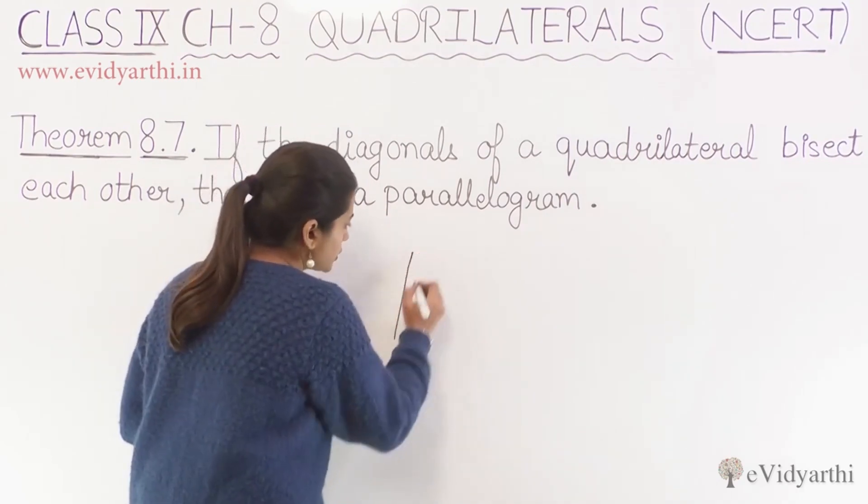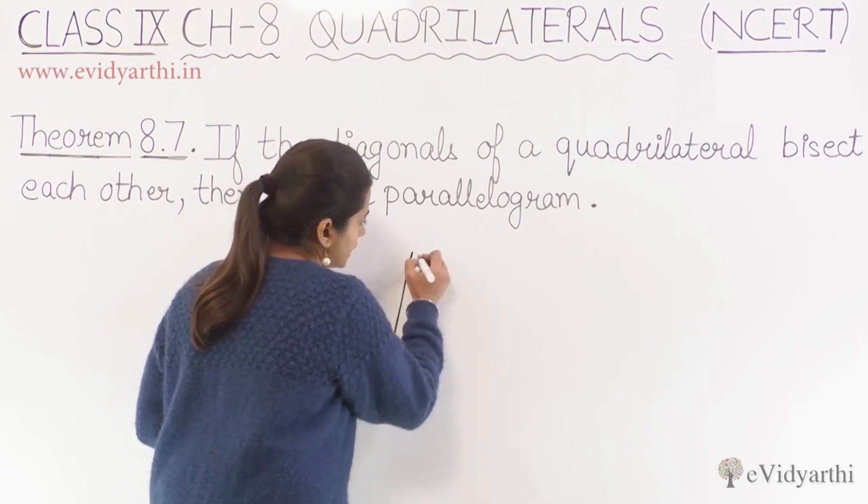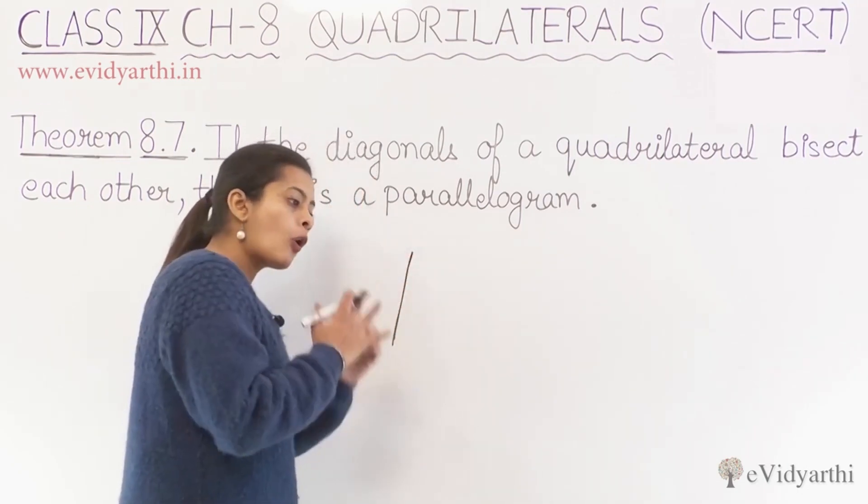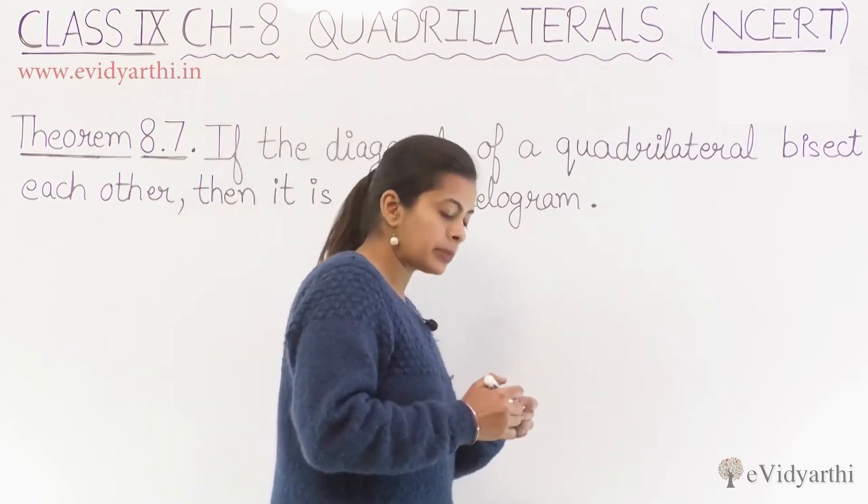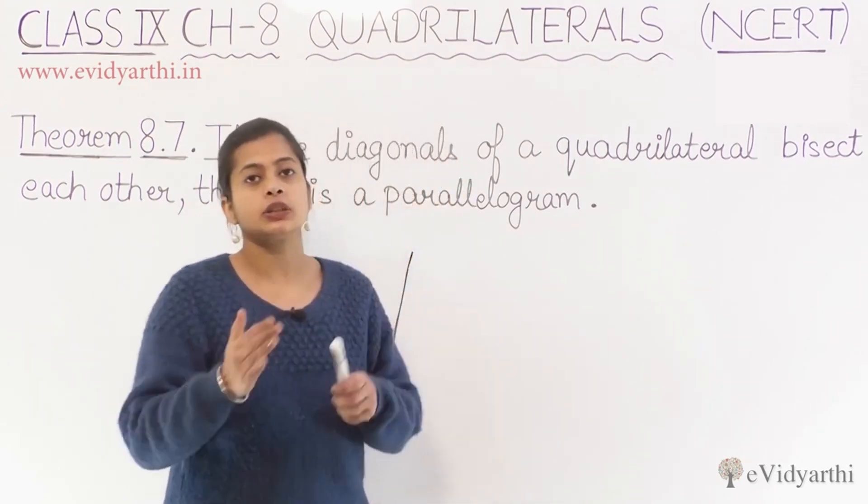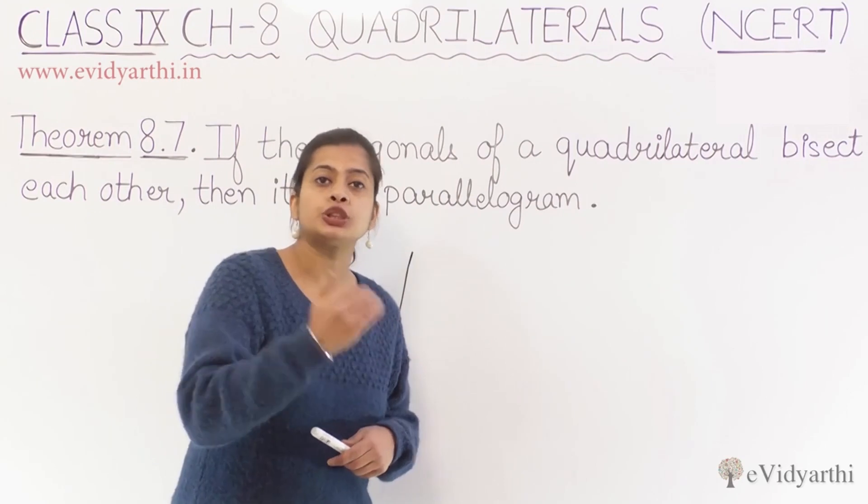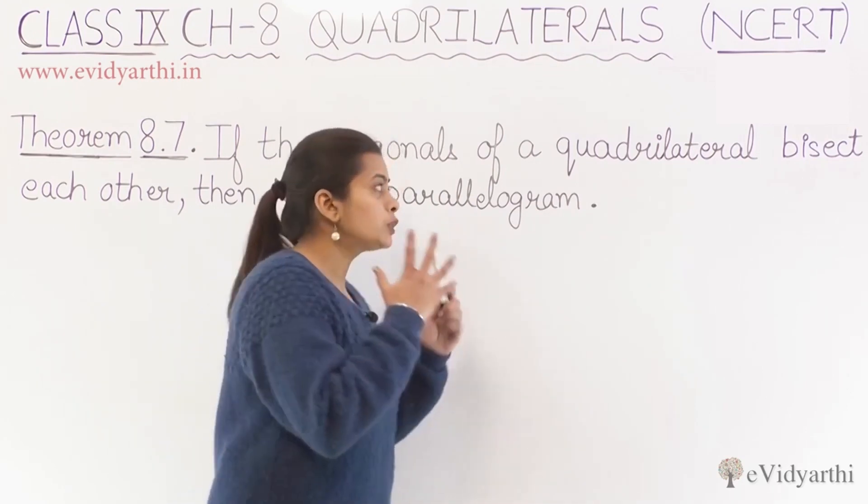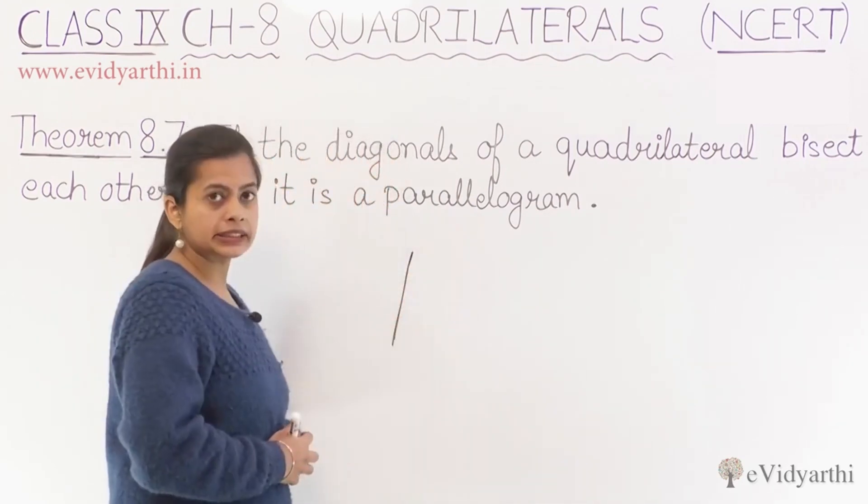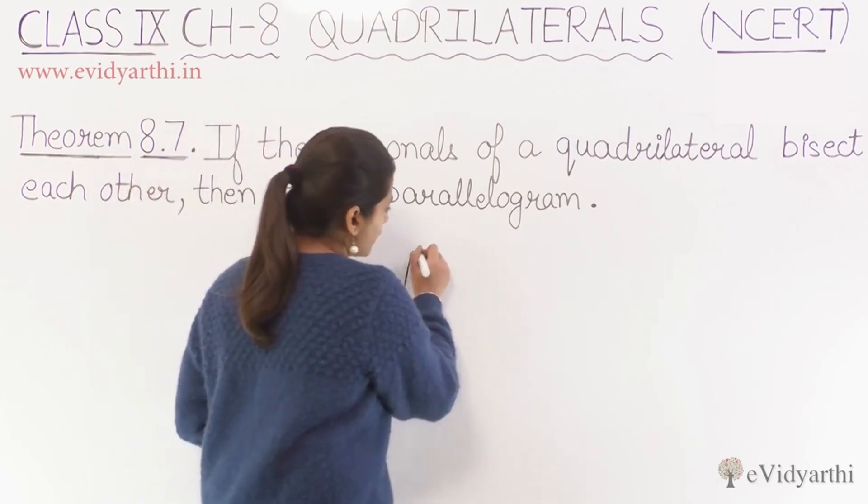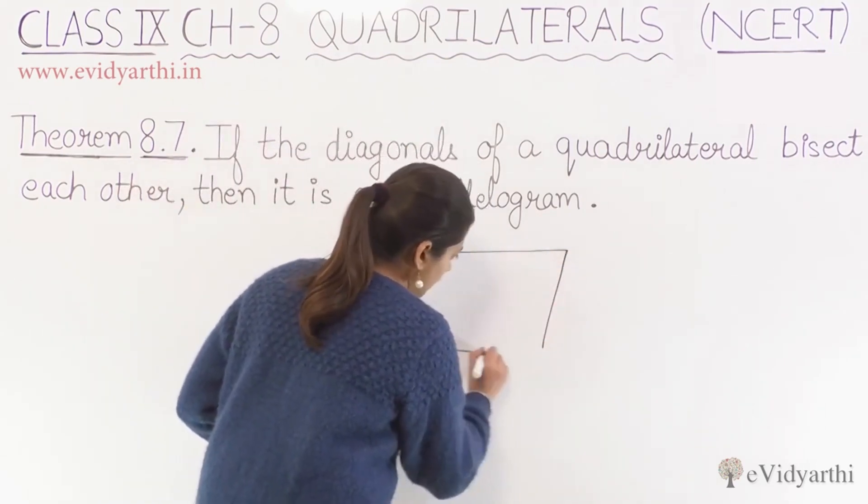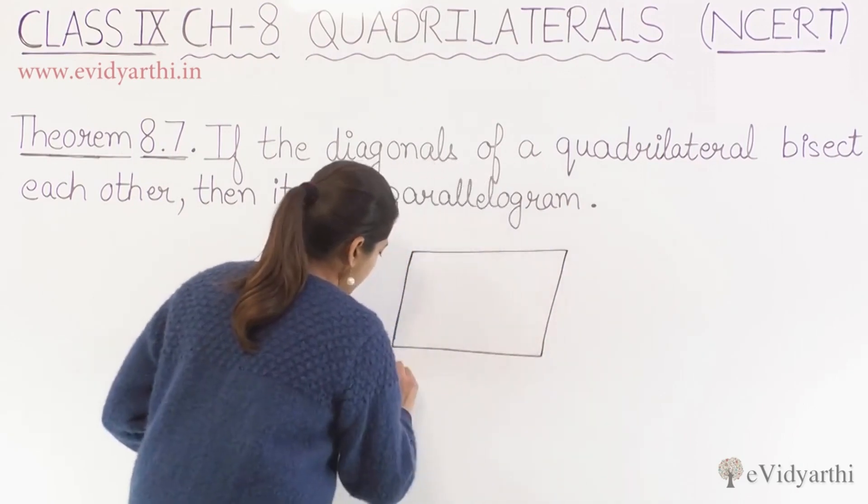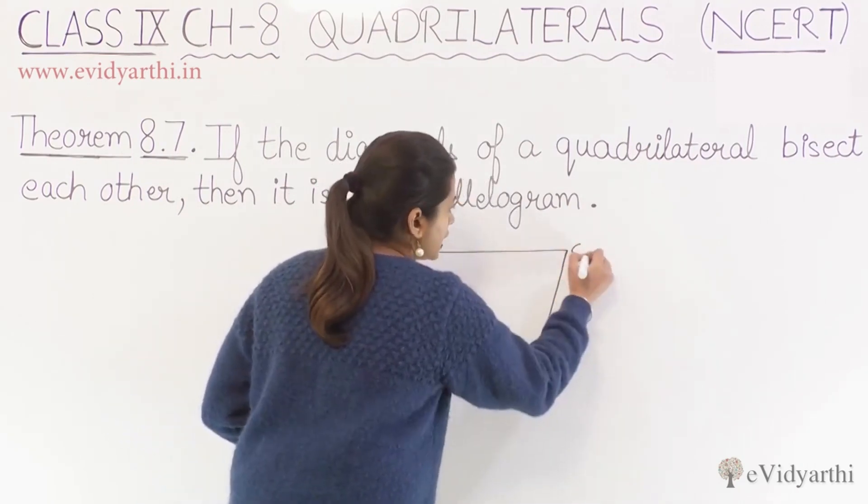Now here, how did the converse happen? Suppose we have a quadrilateral. We have made a figure with four sides.